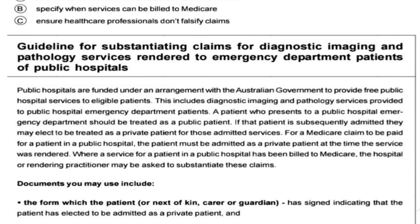They can be treated as a public hospital patient, or they may have had a Medicare claim and be treated as a private patient. Where a service for a patient in a public hospital has been billed to Medicare, the hospital or rendering practitioner may be asked to substantiate those claims. We have to ask the services and the bills to Medicare, and ask the claims to be substantiated.